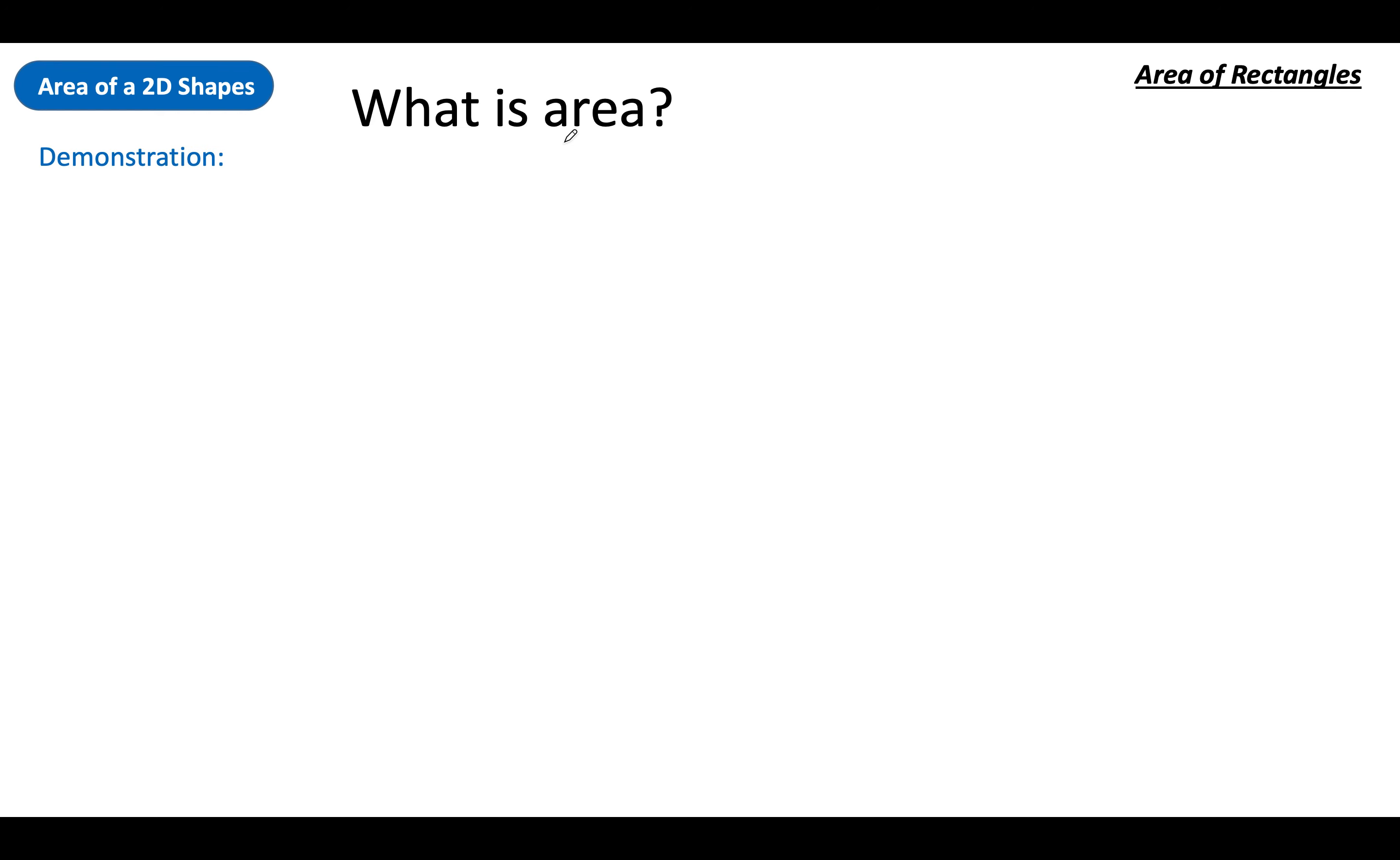Right, first question: what is area? What do we actually mean by area? I would say it was the space inside a 2D shape, a 2-dimensional shape, something that's got breadth and width, something that's basically a flat shape. The area is how much space it's taking up on that page, or if I put my phone down on the table, how much of the table is taken up by my phone.